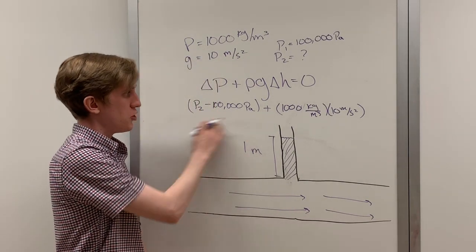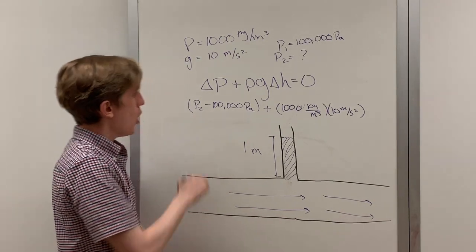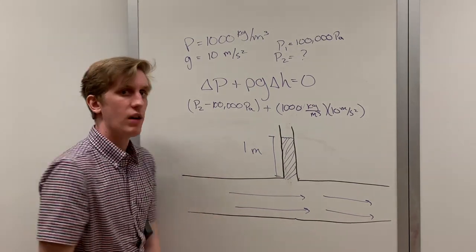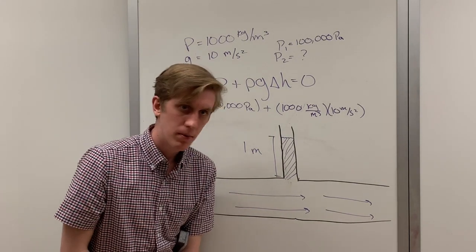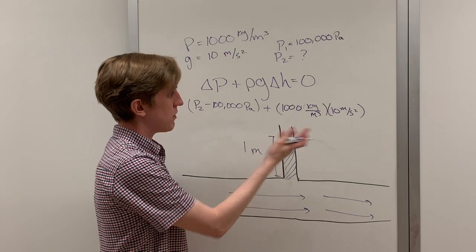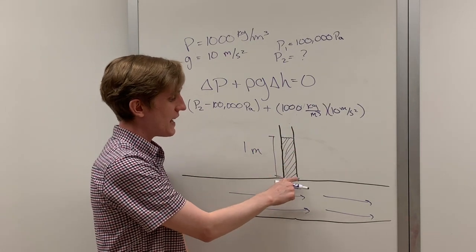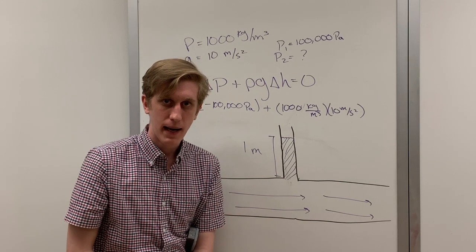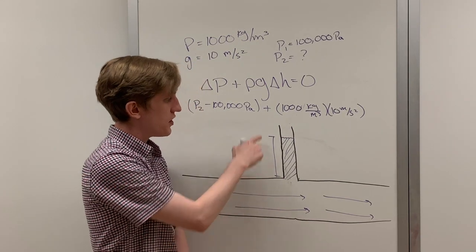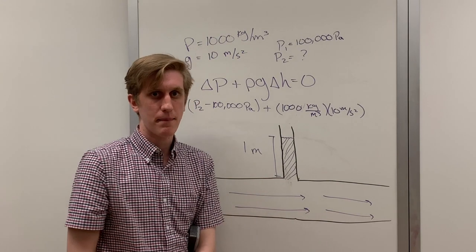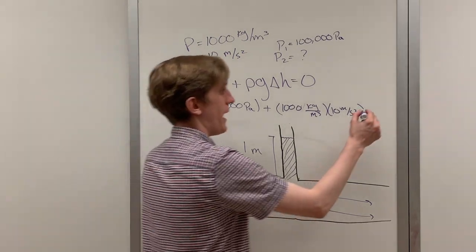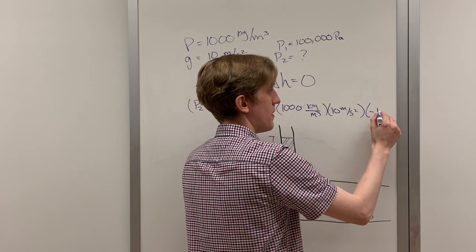Looking at our initial and final pressures, we see that we're taking the pressure at the bottom of the stand pipe minus the pressure at the top of the stand pipe. The same thing applies here. We're going to take the height at the bottom of the stand pipe minus the height at the top of the stand pipe. Now we know that the top of the stand pipe is above the bottom of the stand pipe, so this must be a negative number. So our answer is negative 1 meters.